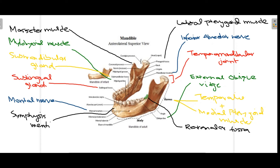The most anterior part of the mandible is the mental protuberance. Superior to the mental protuberance is the symphysis menti — the midline where the two parts of the mandible join at the embryological stage. Adjacent to the mental protuberance we have the mental tubercle, and finally we have the base of the mandible.